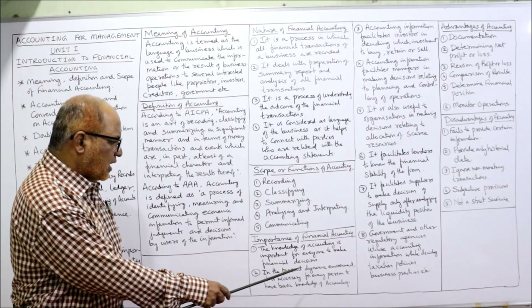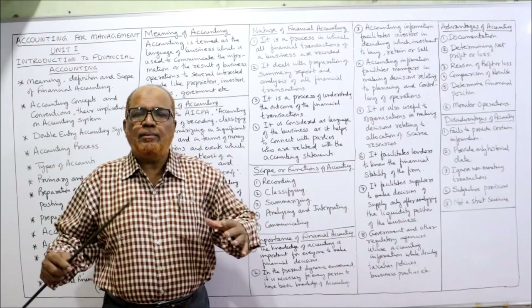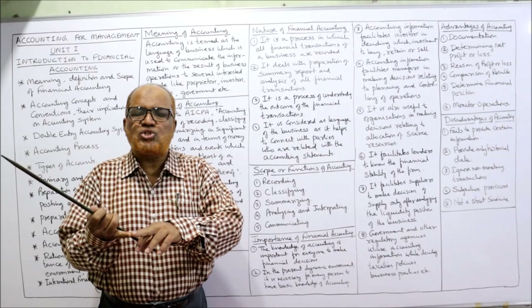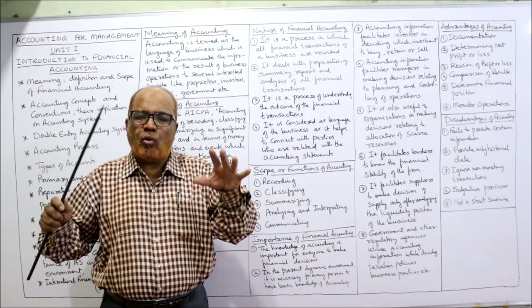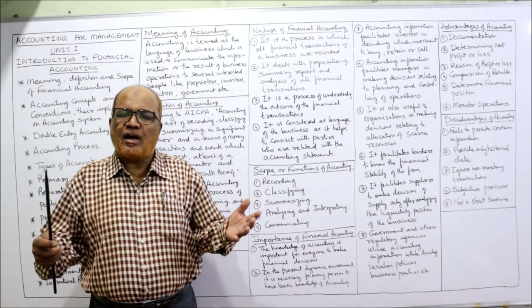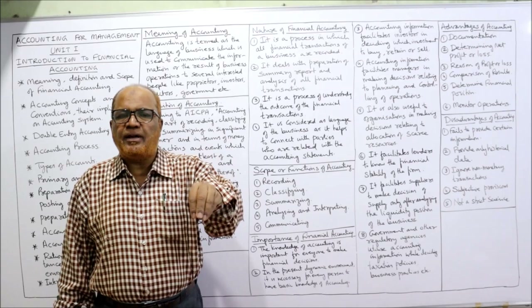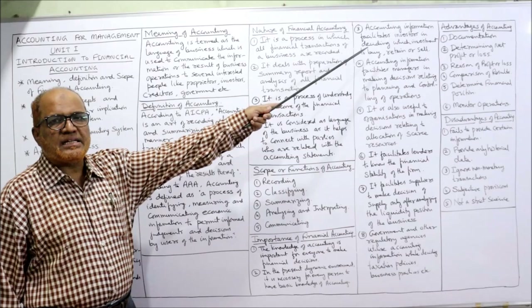Second, in the present dynamic environment — where technology is changing, government laws are changing, competition is increasing — a person can survive only when having basic knowledge of accounting, because so many financial decisions are made daily and those decisions are taken on the basis of accounting.